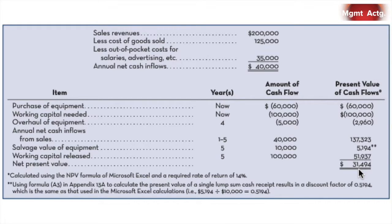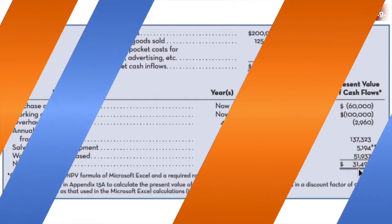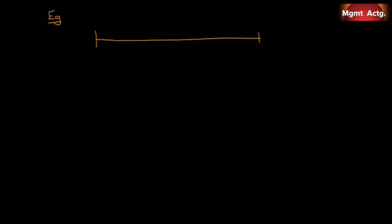So let me show you now how to do that with a timeline. So here is our timeline. And as we read the question, we know that we have a five-year project. So there's our five years. And what are we told? We're told that we have to spend $60,000 on the equipment today. We also have to spend another $100,000 on an increase of working capital. In exchange for that, we're going to receive $40,000 in net cash flow in each of the following five years.